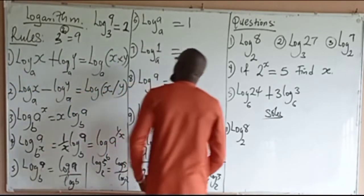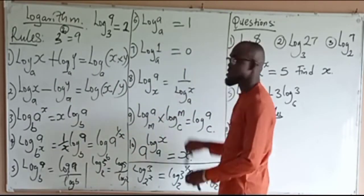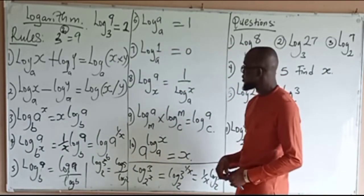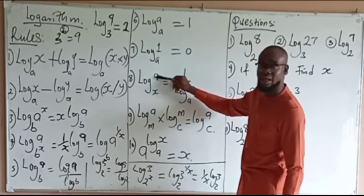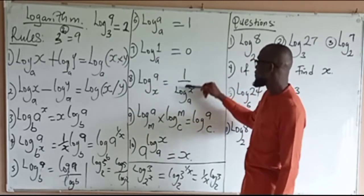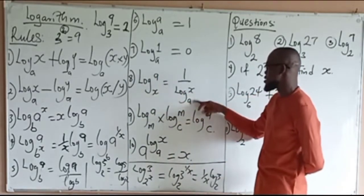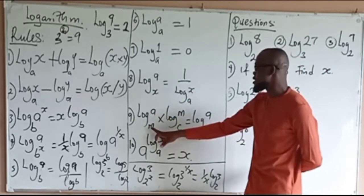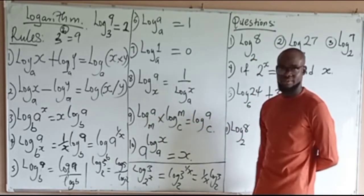Another rule: the log of a number to the same base — log A to base A — equals 1. And if you have log 1 to any base at all, that will be 0. Also, we have the chain rule: log A to base M times log M to base B equals log A to base C. These are the key rules we will be using.